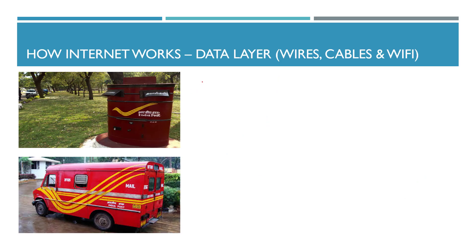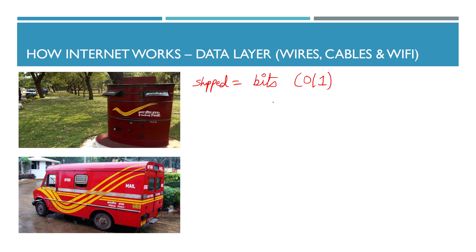Now, how does the internet really work? Imagine how the Indian postal service works: you want to send a message, which could be physical goods — paper or tangible items — taken from one place to another and posted to a certain address. On the internet, what gets shipped is data. You are shipping bits, because a computer only understands zero or one — on or off. You are sending bits instead of physical goods.